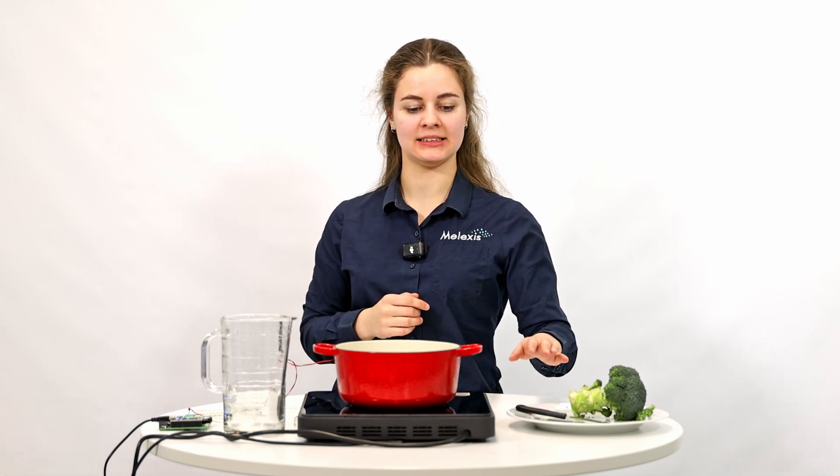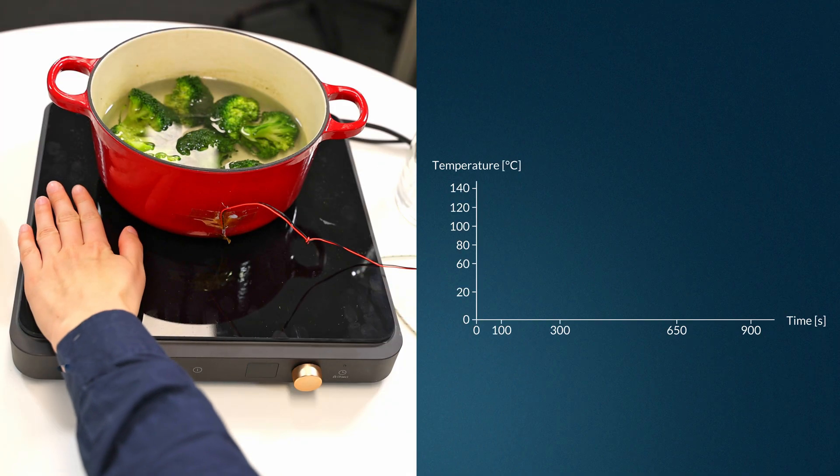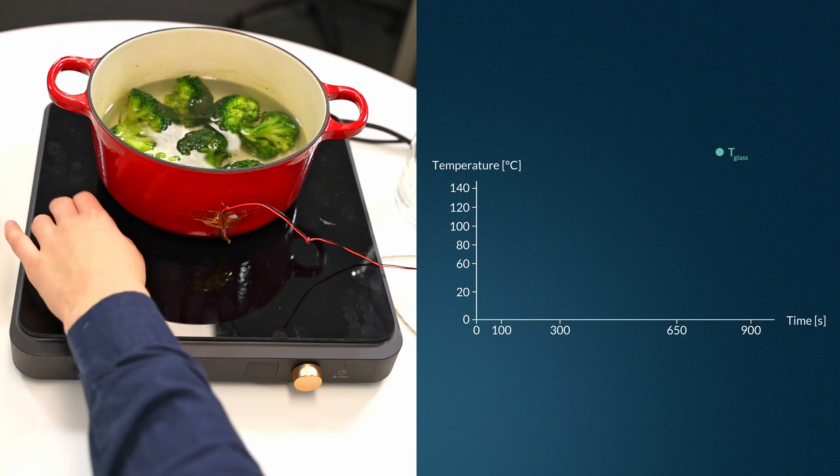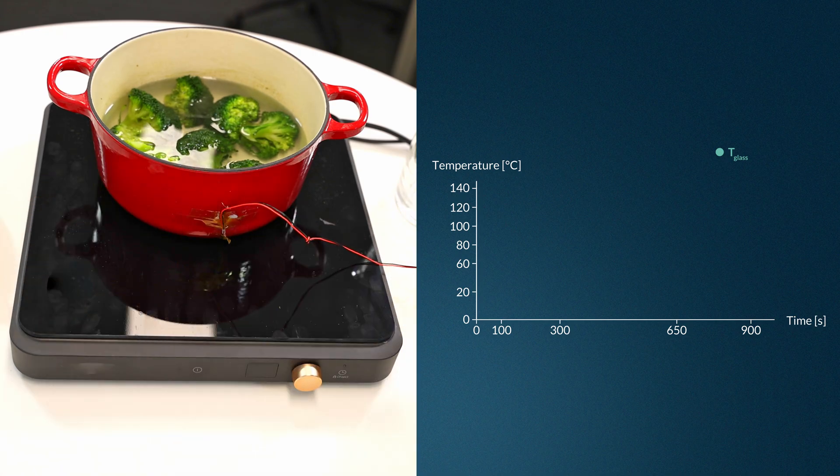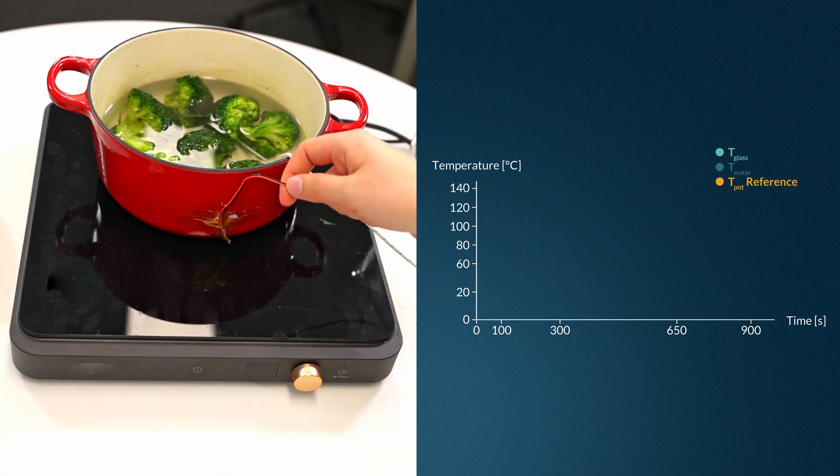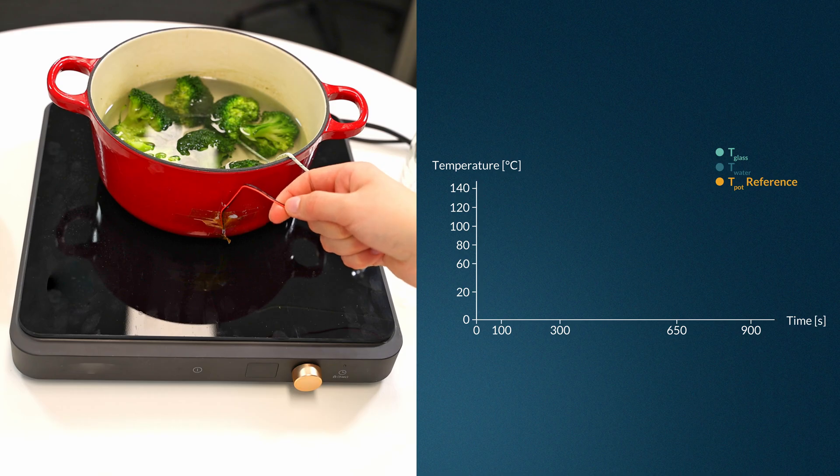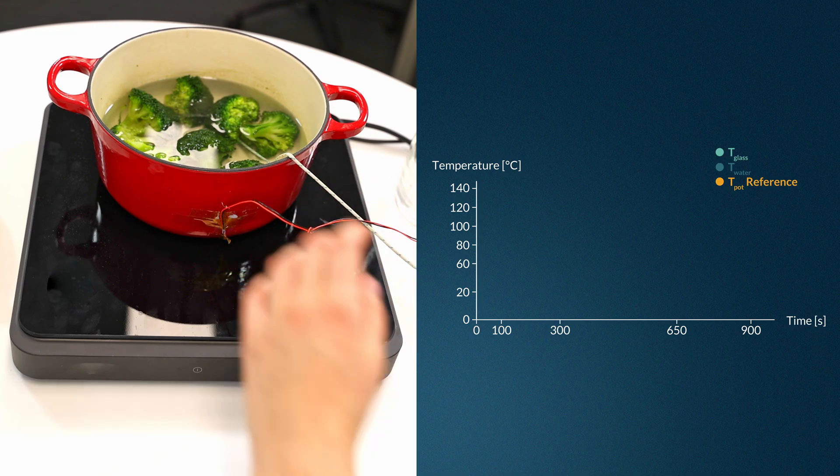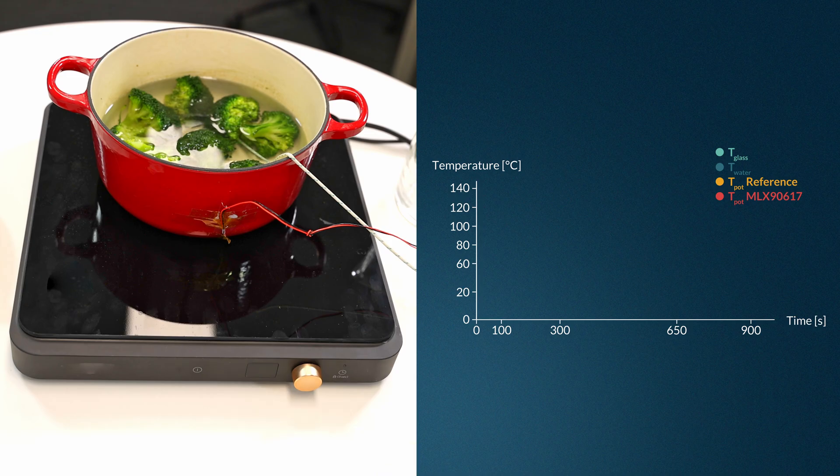On the screen you will see a graph with four real-time measurements. First is the temperature of the glass itself. Second is the temperature of the water. Then the reference pot temperature measured with a contact temperature sensor placed in the bottom of the pot. And the last one is the temperature of the pot measured with the new Melexis sensor. I will start the cooking.